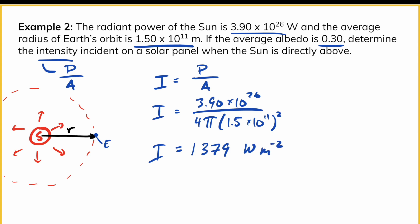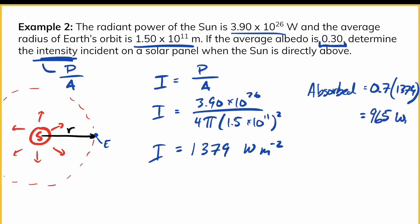Given that the average albedo is 0.3, we know that 30% of this energy is reflected. Since we want the intensity absorbed by a solar panel, we use the remaining 70%: 0.7 × 1,379 = 965 watts per meter squared. That is the intensity of incident sunlight when the sun is directly above.